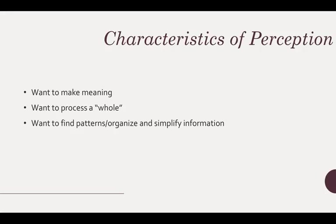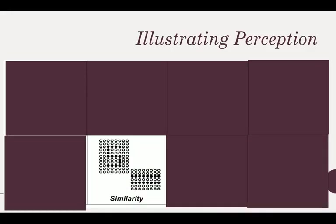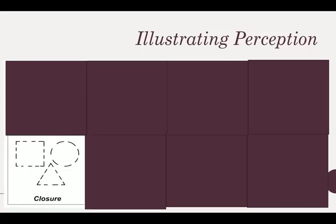We want to find patterns and organize information. Here, for example, we wanted to say these are two black lines surrounded by white lines, or this is the letter S. We wanted to identify a pattern. We wanted to put the information together into a whole, to figure out how information is organized. This is a good example of trying to make something into a whole.